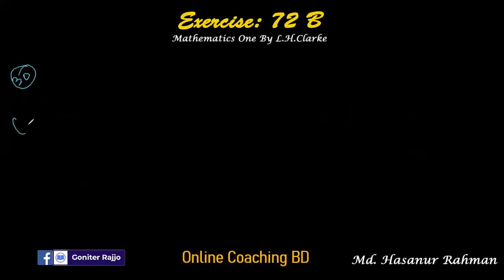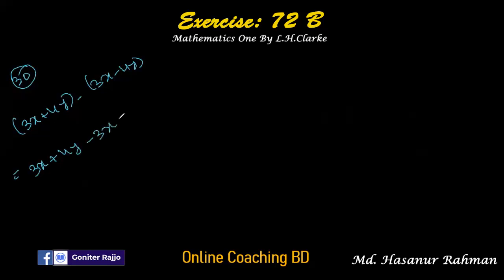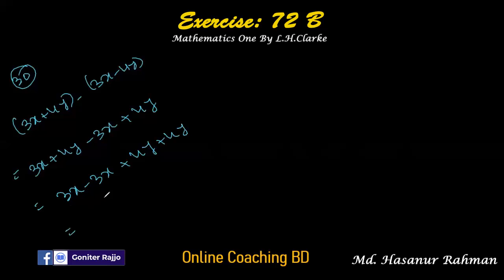Number 30 says 3x plus 4y minus 3x minus minus 4y. Minus into minus is plus 4y. So 3x minus 3x is 0, and 4y plus 4y is 8y. The answer is 8y.